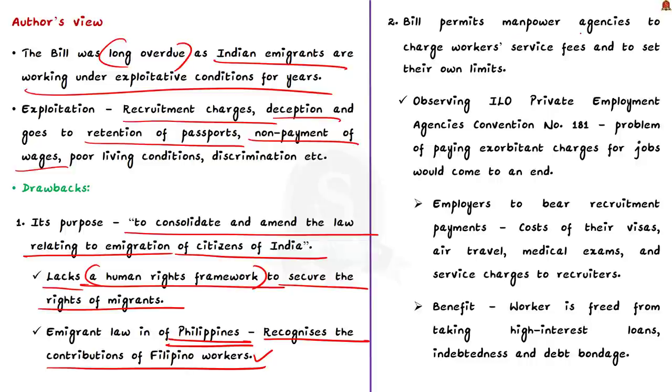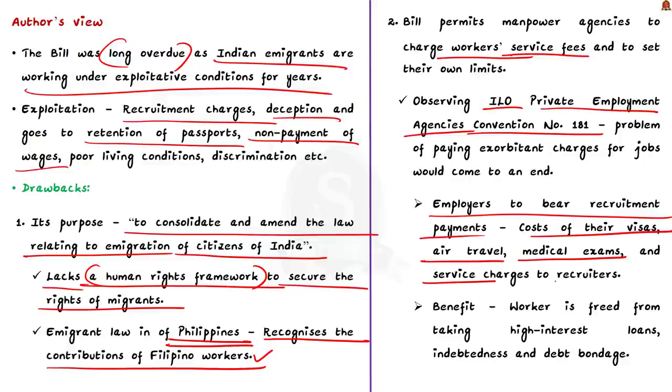The second criticism is regarding service fees. The bill permits manpower agencies to charge workers service fees and allows agents to set their own service fee limits. Author is critical of this because it is against the international labor organizations convention number 181 regarding private employment agencies convention. As per this convention, employers have to bear recruitment payments and not the workers. Recruitment payments includes cost of visas, air travel, medical exams and even service charges to recruiters. But this feature of this convention is ignored in the bill. If these provisions are included then the problem of Indian workers paying exorbitant charges for jobs would come to an end.